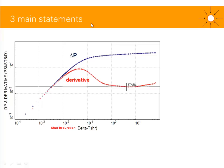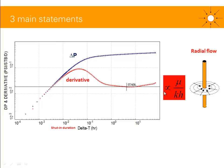I have three main statements for you. The first main statement is: a stabilization on your derivative plot could be indicative of radial flow regime. Radial flow regime is a circular flow towards the well in the horizontal plane. The level of this stabilization is inversely proportional to your mobility, KH over mu — K being the permeability in the horizontal plane, H your net reservoir thickness, and mu the fluid viscosity.